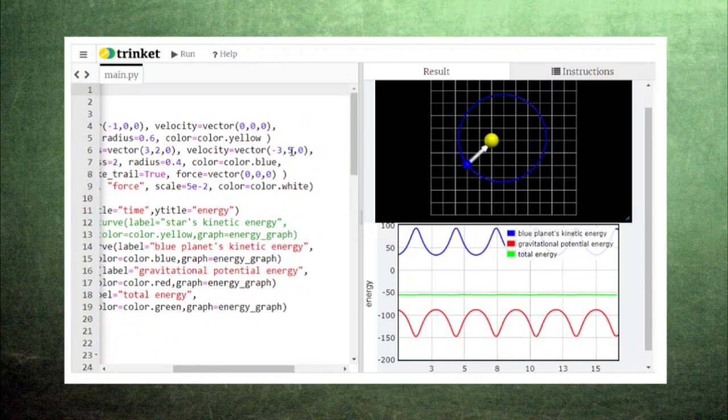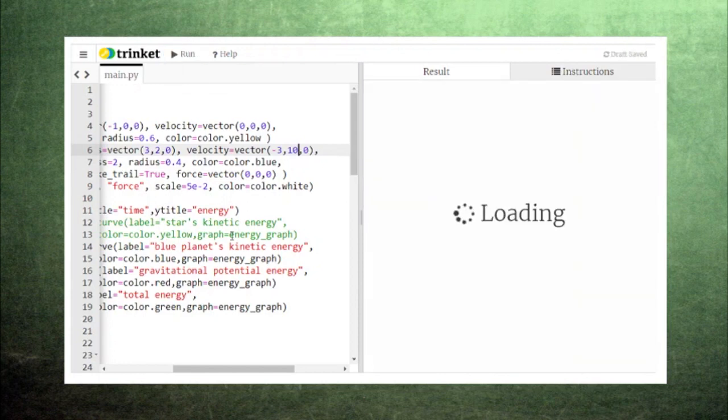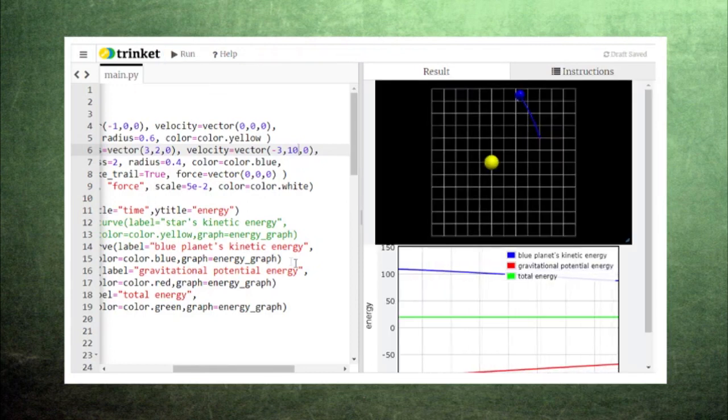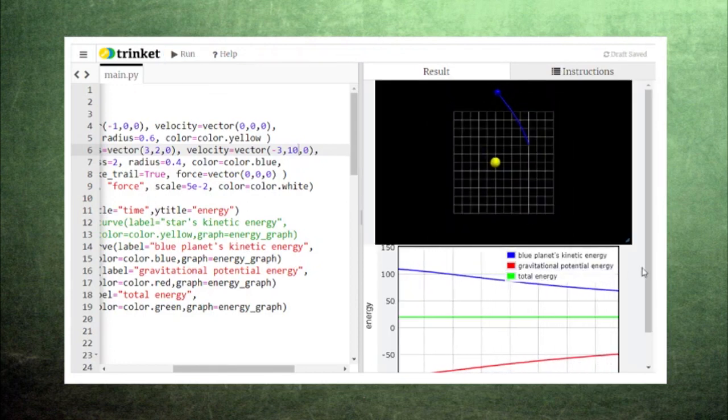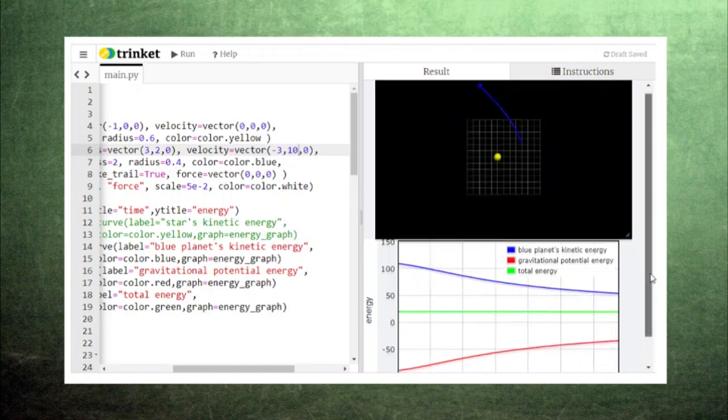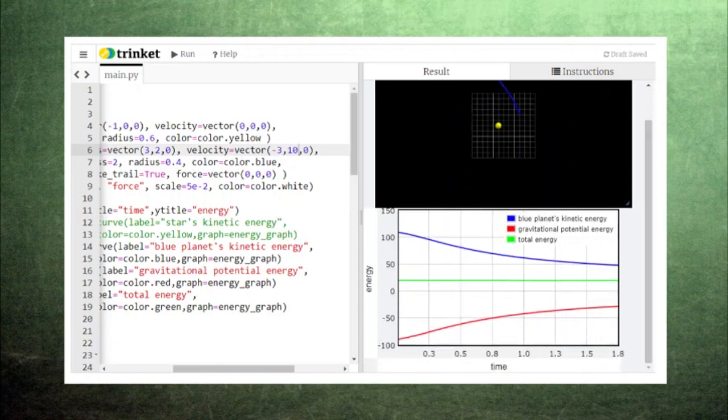Now if we switch to a scenario where the planet escapes from the star, we can see the energy obey the same rule. As the planet gets farther away from the star, its kinetic energy decreases and its potential energy increases, both moving toward zero.